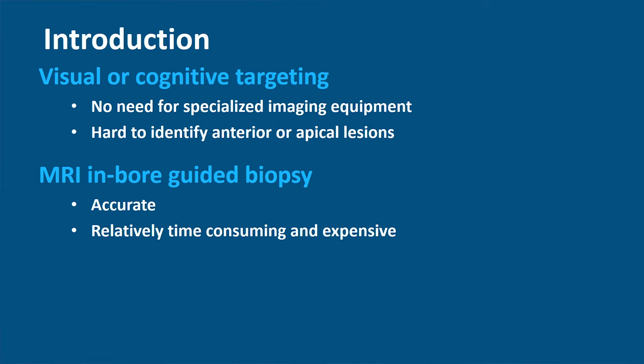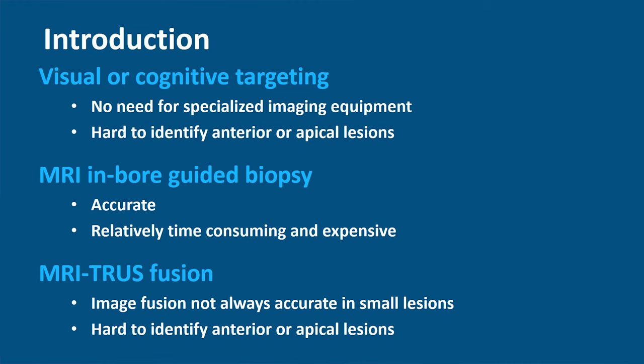The third method is by using rigid or elastic registration of fusion software, where MR images are fused with real-time TRUS images. The crucial factor in this method is accurate fusion of the images, which can be affected by, for example, prostate deformation or patient movement.